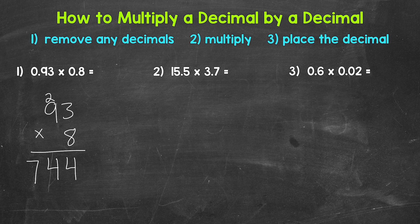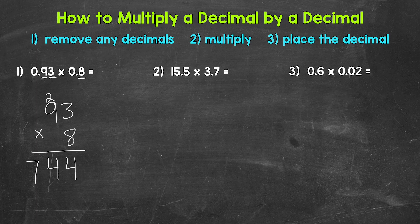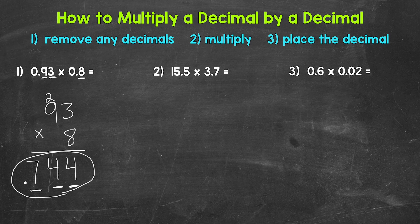Now we need to place the decimal in that answer. We do that by looking back at the original problem and seeing how many decimal digits we have — how many digits are to the right of a decimal. This 9 is 1, this 3 is 2, and this 8 is 3. We have 3 decimal digits, so our answer needs 3 decimal digits — 3 digits to the right of the decimal. So 1, 2, 3: our decimal goes to the left of the 7. So our answer is 744 thousandths, 0.744.